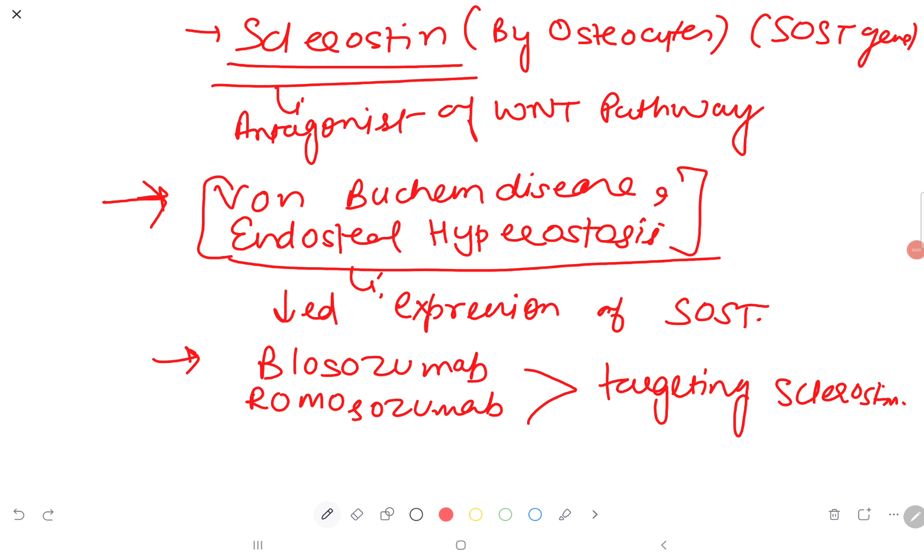Now we will talk about sclerostin. What is sclerostin? Sclerostin is produced by osteocytes and encoded by the SOST gene. Sclerostin is an antagonist of the WNT pathway, which works for osteoblasts.